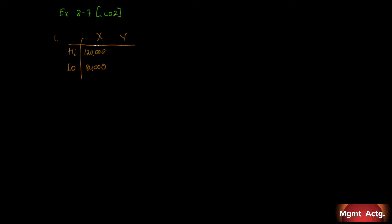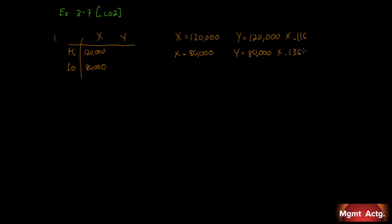At X equal to 120,000 we are told that Y will equal 120,000 times 11.6 cents, and at X equal to 80,000 we're told that Y will equal 80,000 times 13.6 cents. If the truck is driven 120,000 kilometers during the year, the average operating cost is 11.6 cents, so we work backwards: 120,000 times 11.6 cents gives us $13,920.